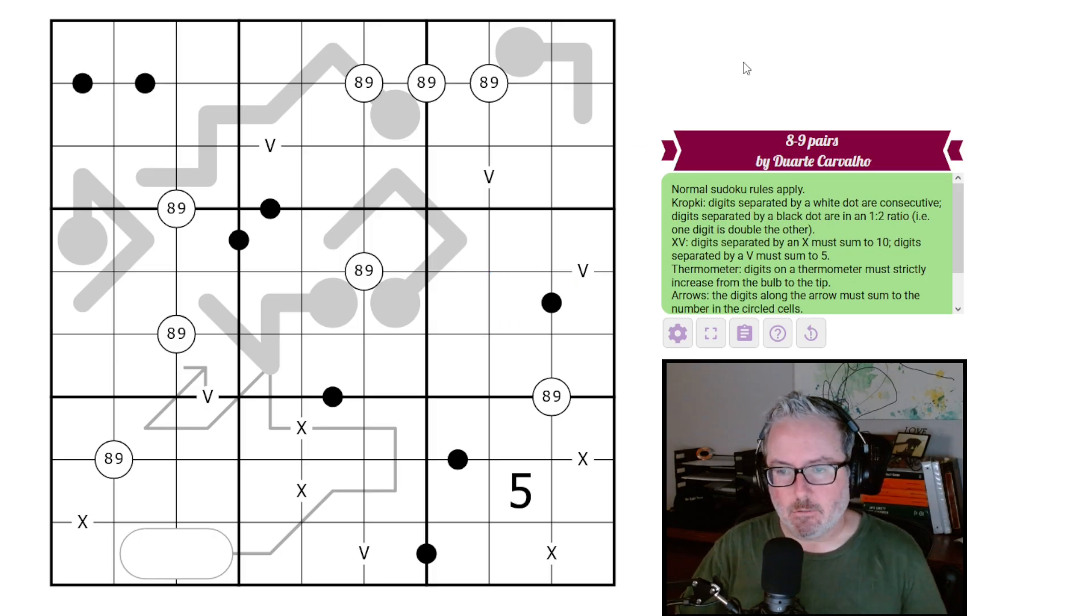Then we have XV clues. Digits separated by an X sum to 10. We do have Xs, so these will be 10. We do have Vs, these will be five.